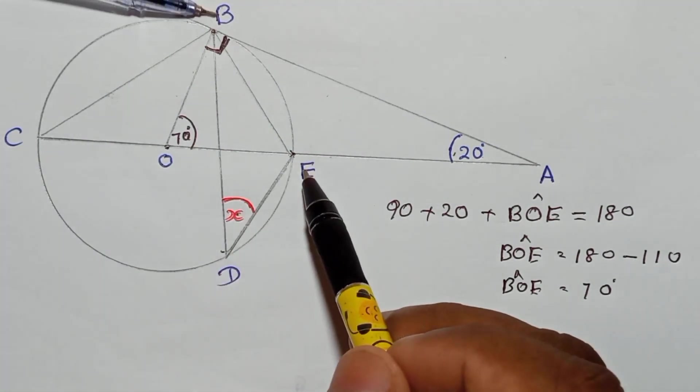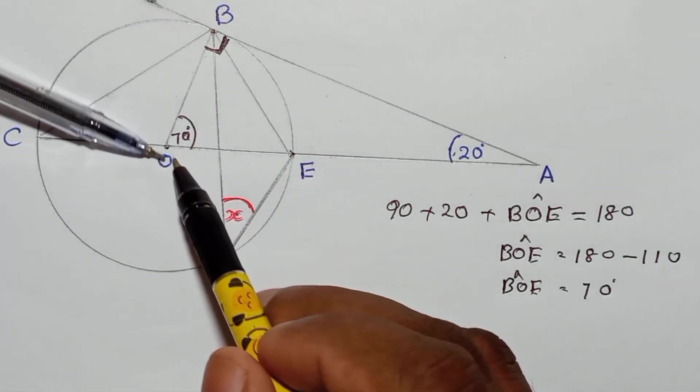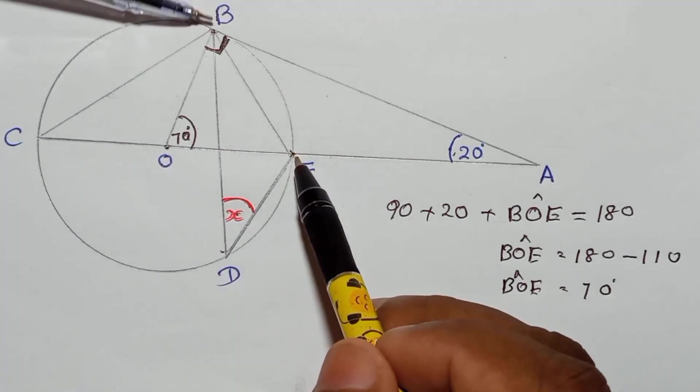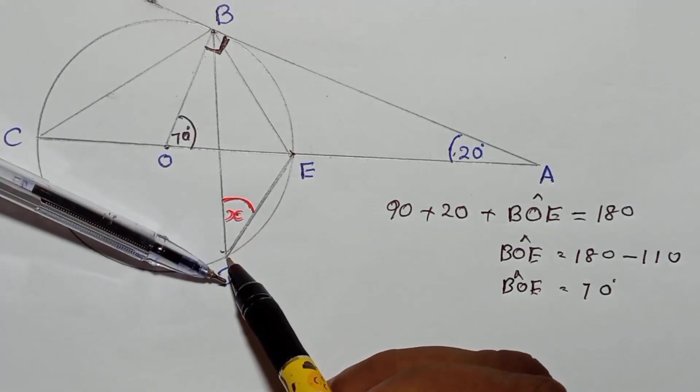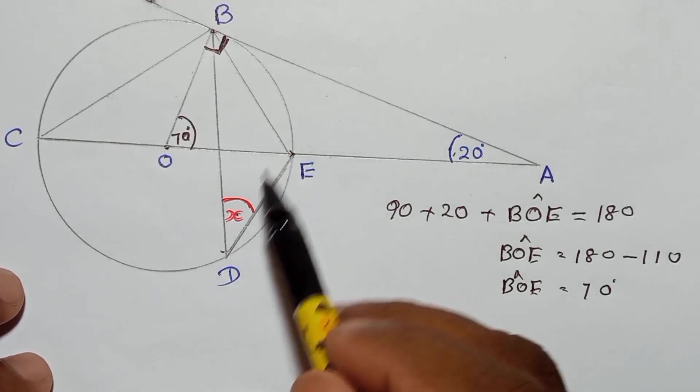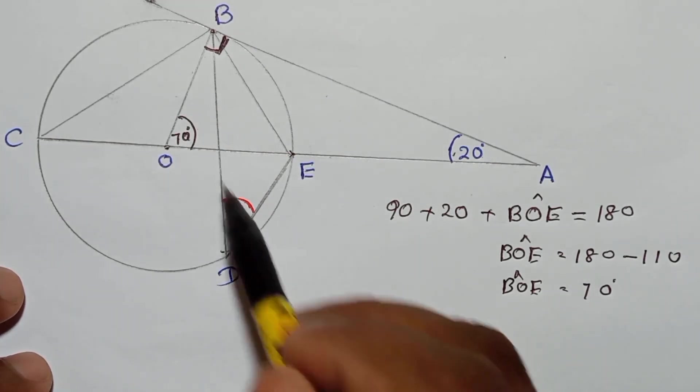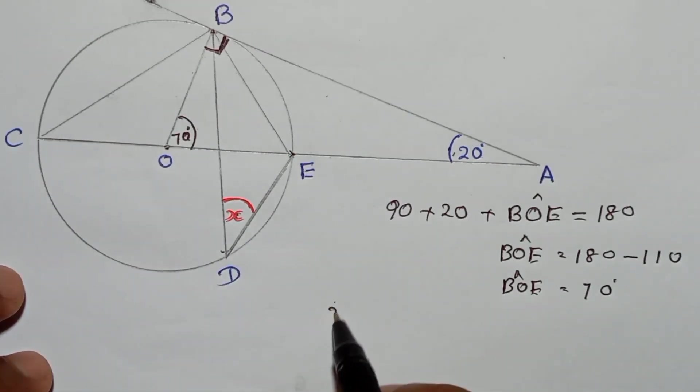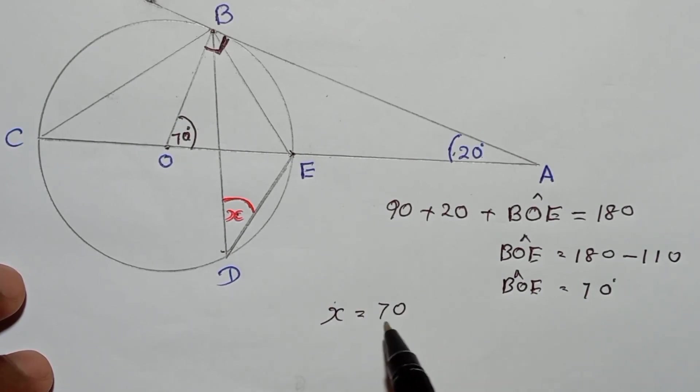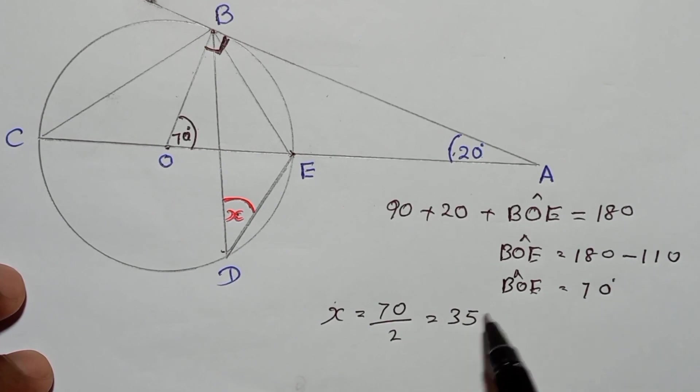From BE go to O, that means the center. From BE go to the circumference. When you have this type of situation, keep in mind: the circumference angle should be half of this. That means you can write x equals 70 divided by 2, which equals 35 degrees. That's the value for x.